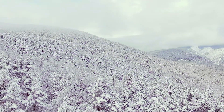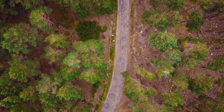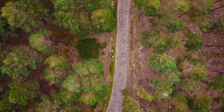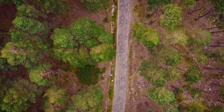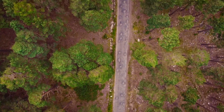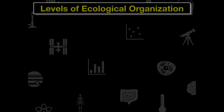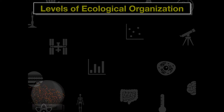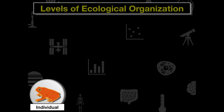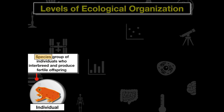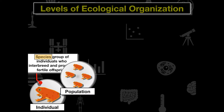Life on earth occurs in a hierarchy of levels, and different scientists study these different levels — from a single cell to an entire forest. When thinking about levels of organization, we start with the individual, which is our smallest level. A species is a group of individuals who interbreed and produce fertile offspring.